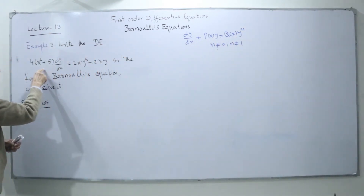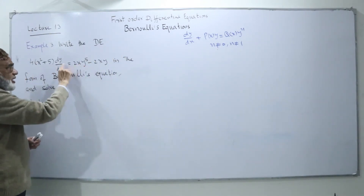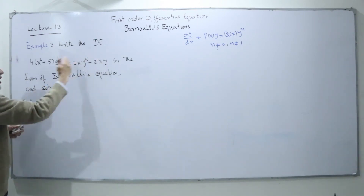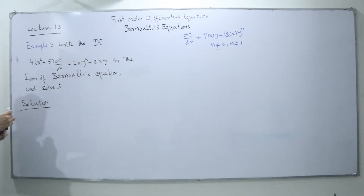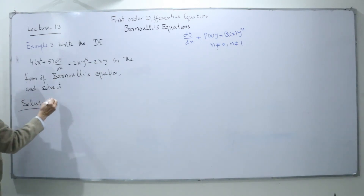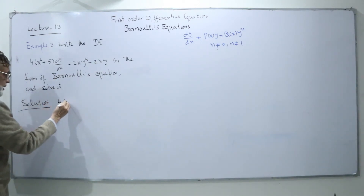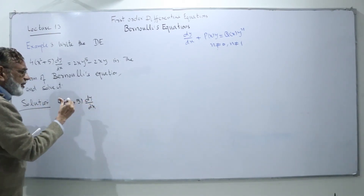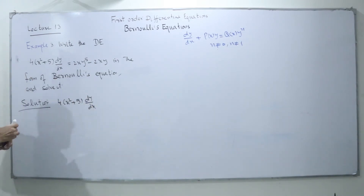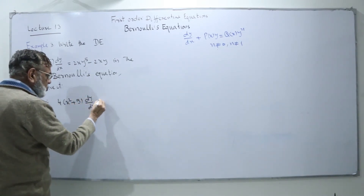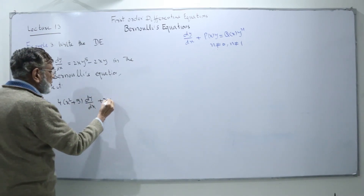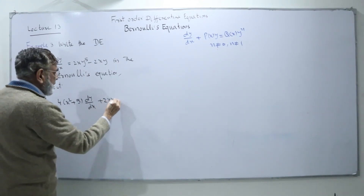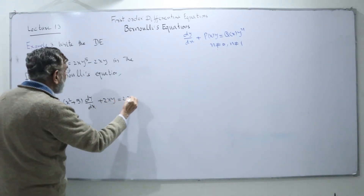Looking at this equation, the coefficient is not 1 and y is not in the correct position, so we have to shift terms to the right and left-hand side. We rewrite: first we shift this term to the left-hand side. We can write the equation in the form 4(x² + 5) dy/dx, then shifting the other term to the right-hand side, we get plus 2xy and 2xy to the power 5.